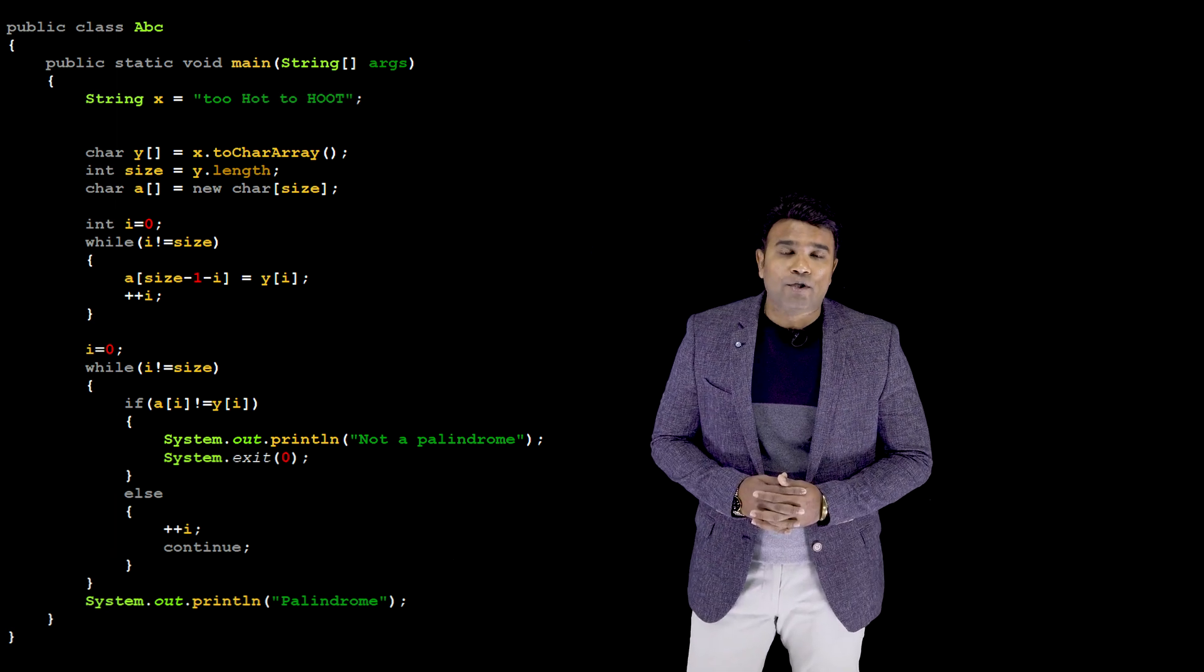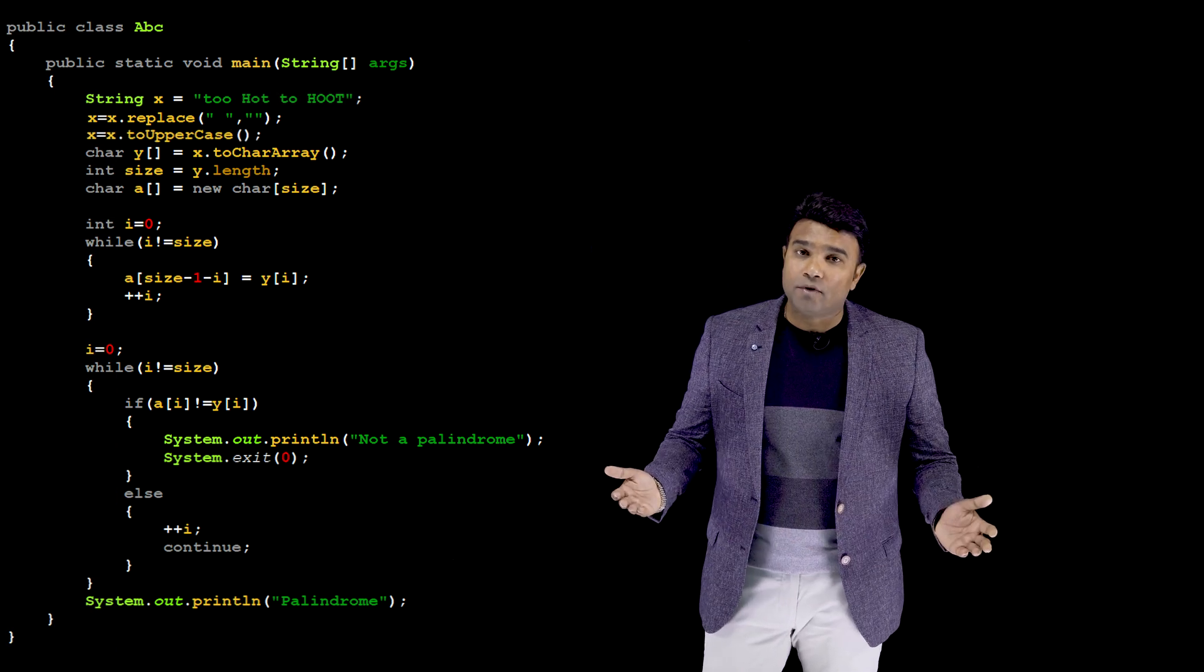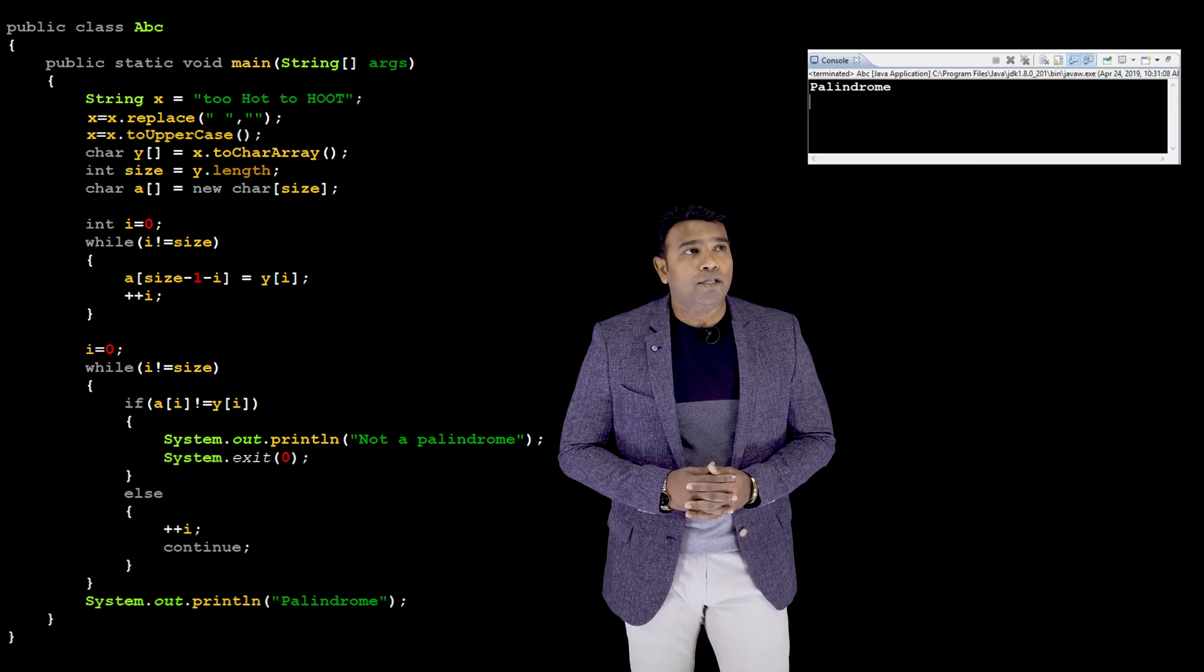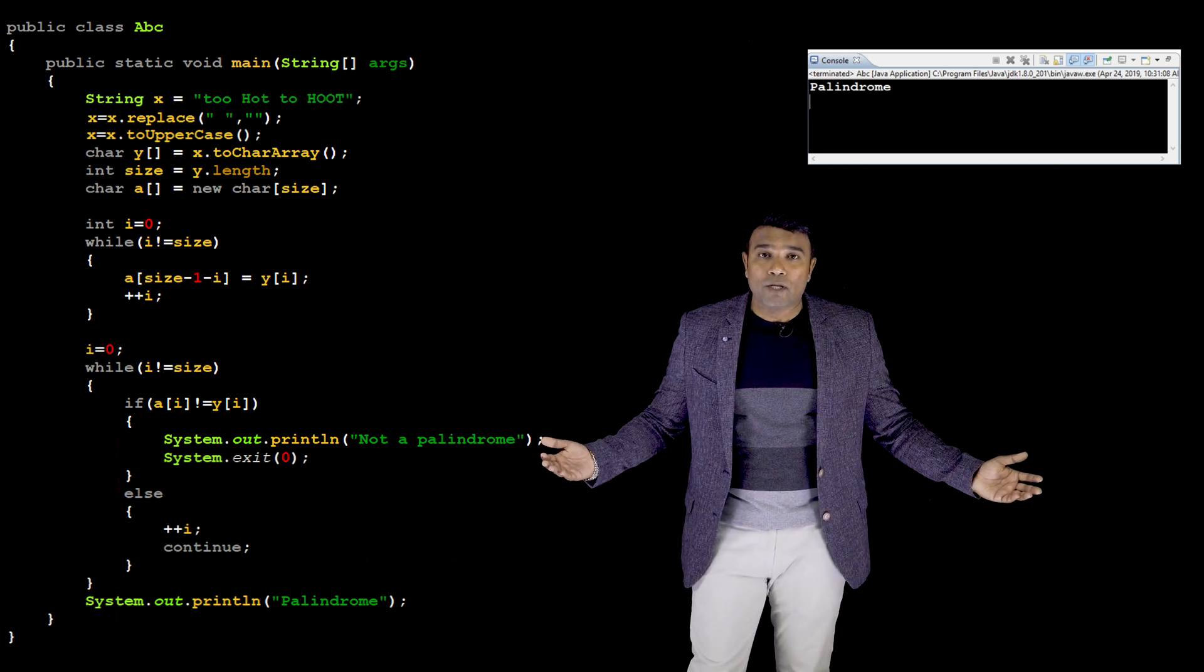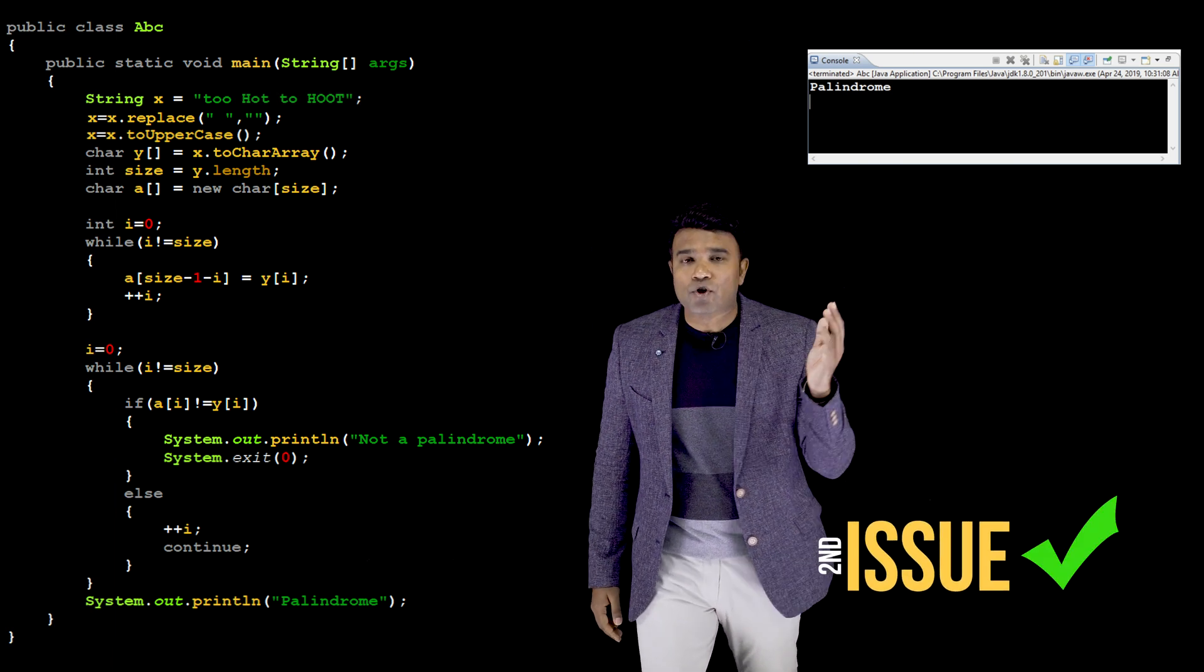In this, I am going to add one statement which takes care of the blank spaces like this. And another statement I would be adding which would convert all my characters to uppercase. Well, if you want, you can convert them to lowercase. Anyway, when I will execute, this is the outcome. So, it goes to show that I have made my palindrome program to work on almost all the cases.